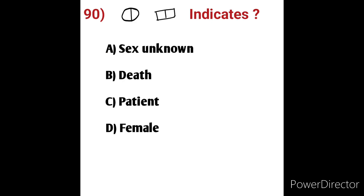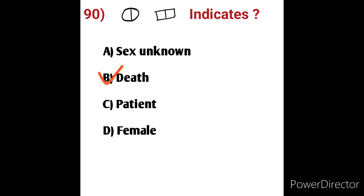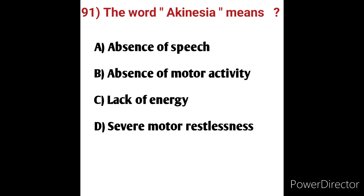Question 90: These symbols indicate what? Options: A) sex unknown, B) death, C) patient, D) female. On screen we see a circle with a line through the middle and a box with a line through the middle. A circle means female and a box means male; the line through the middle indicates death. Option B, death, is the correct answer.